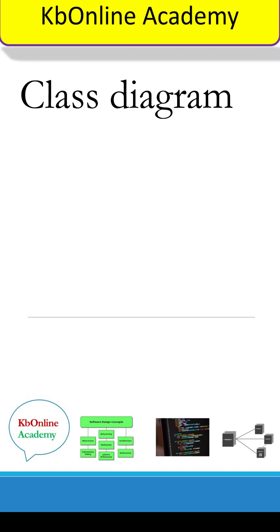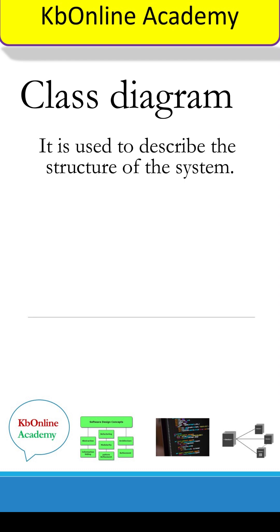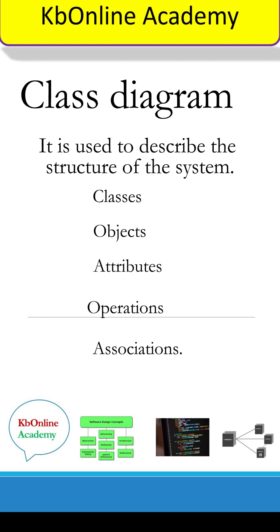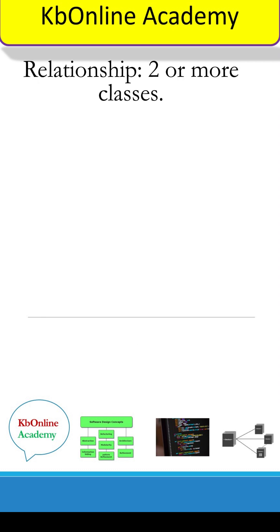Class diagram is used to describe the structure of the system. It describes the system in terms of classes, object, attributes, operations, and their associations.